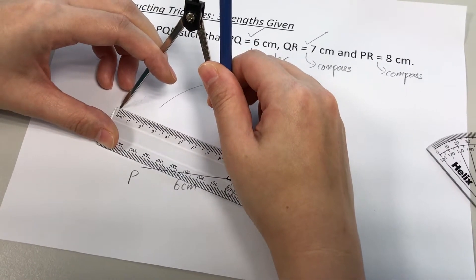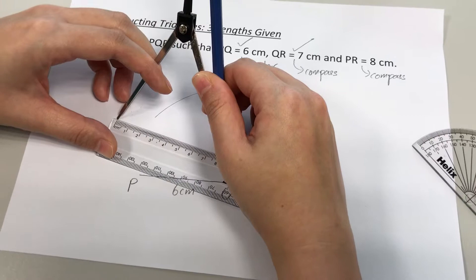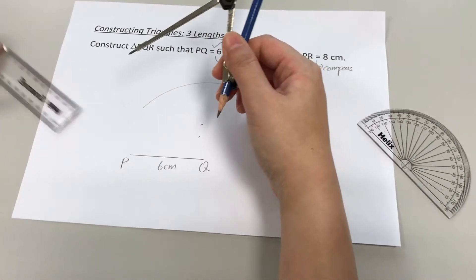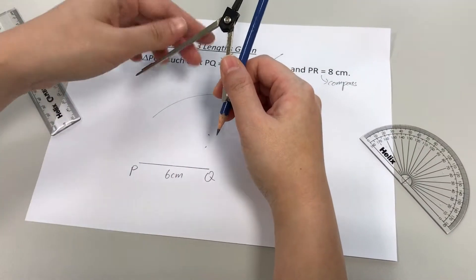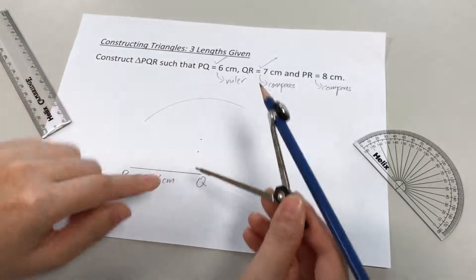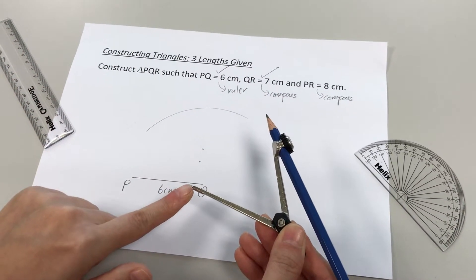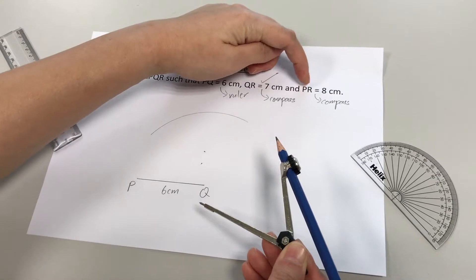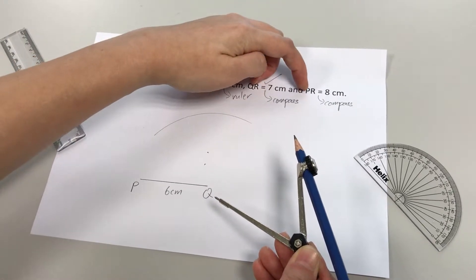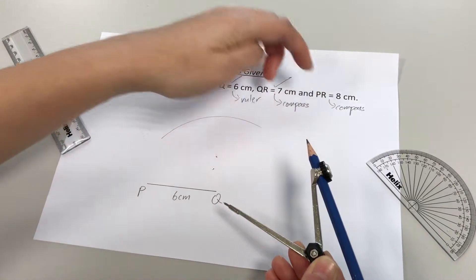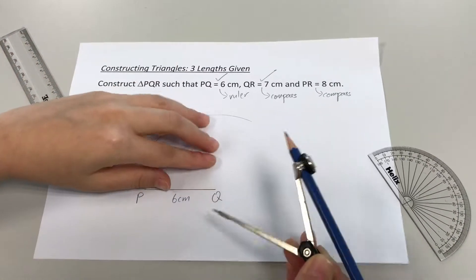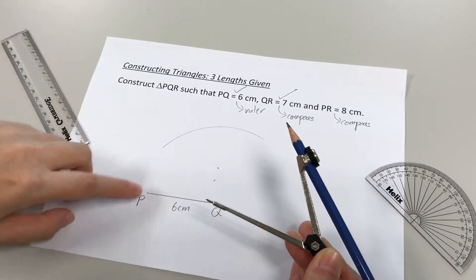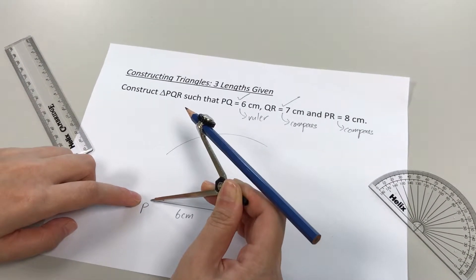Okay, 8cm. All right, so I have my 8cm distance open in my compass. Make sure you do not adjust the distance anymore. And now decide where am I going to place my needle. 8cm is for PR, so I can either place the needle at point P or point R. Okay, right now R is still not appeared yet. We only have P, so obviously I will place my needle at P.